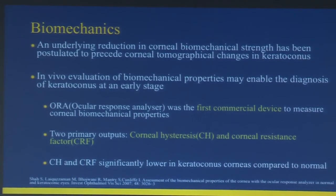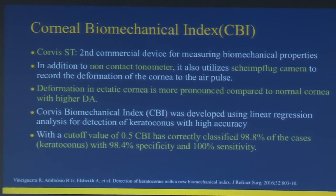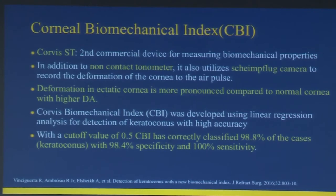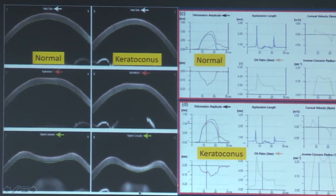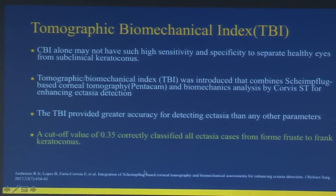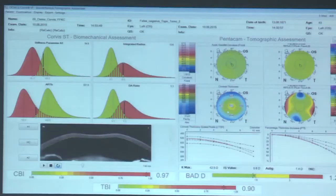Keratoconic corneas are biomechanically weaker; corneal hysteresis and corneal resistance factor will be lower compared to normal corneas. The Corneal Biomechanical Index (CBI) shows more deformation in keratoconic corneas. When Corvis ST is combined with Pentacam, we get the Tomographic Biomechanical Index (TBI), claimed to be the most accurate way of detecting ectasia. A cutoff value of 0.35 correctly classifies all ectasia cases from forme fruste to frank keratoconus.